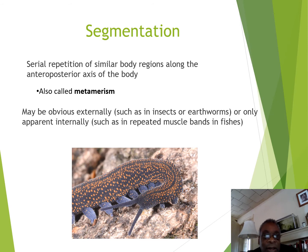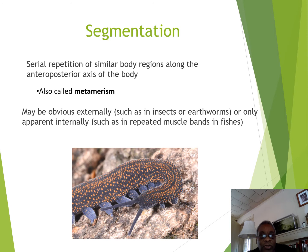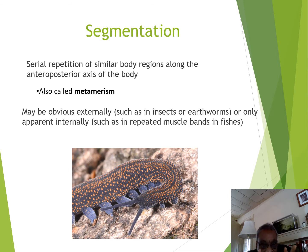Segmentation is a very large evolutionary advantage. It's a serial repetition of similar body regions. If you think about beads on a string, each one of those represents a subset, a duplication of the body part. You can see it obviously externally in insects or earthworms, but only internally in things like muscle bands in fishes.